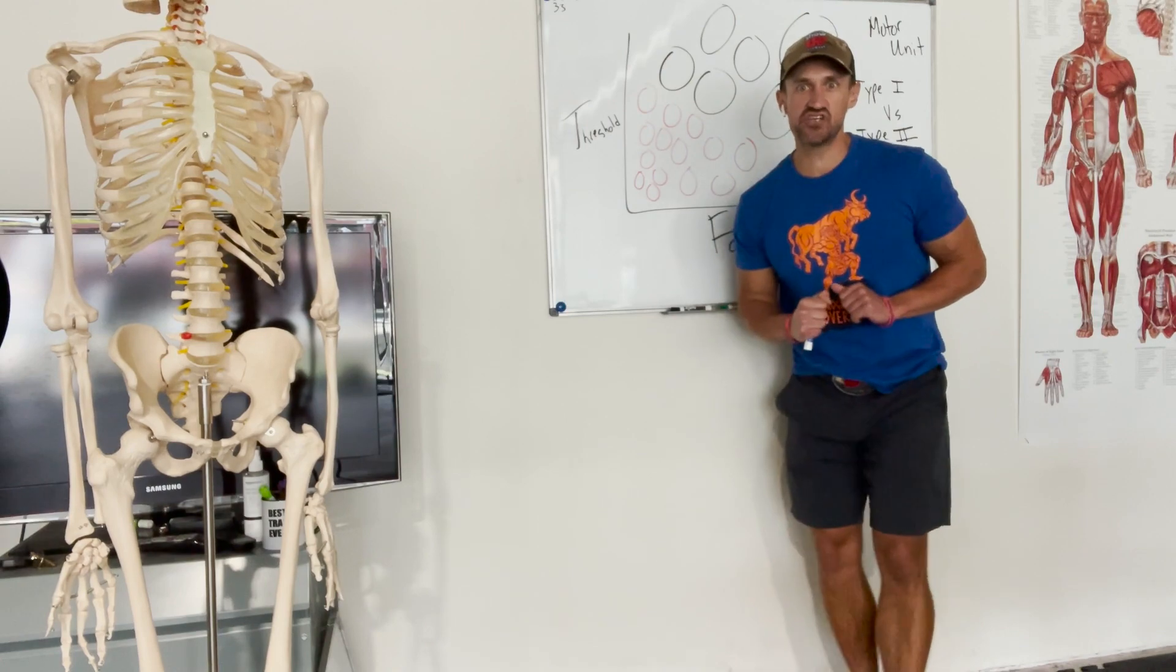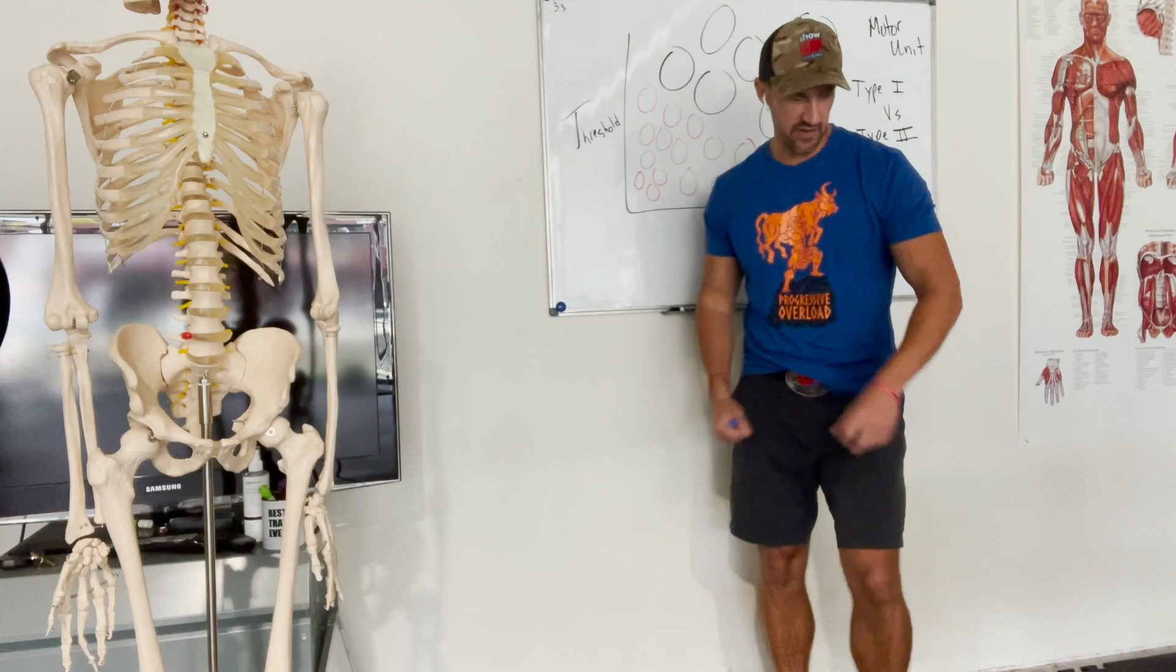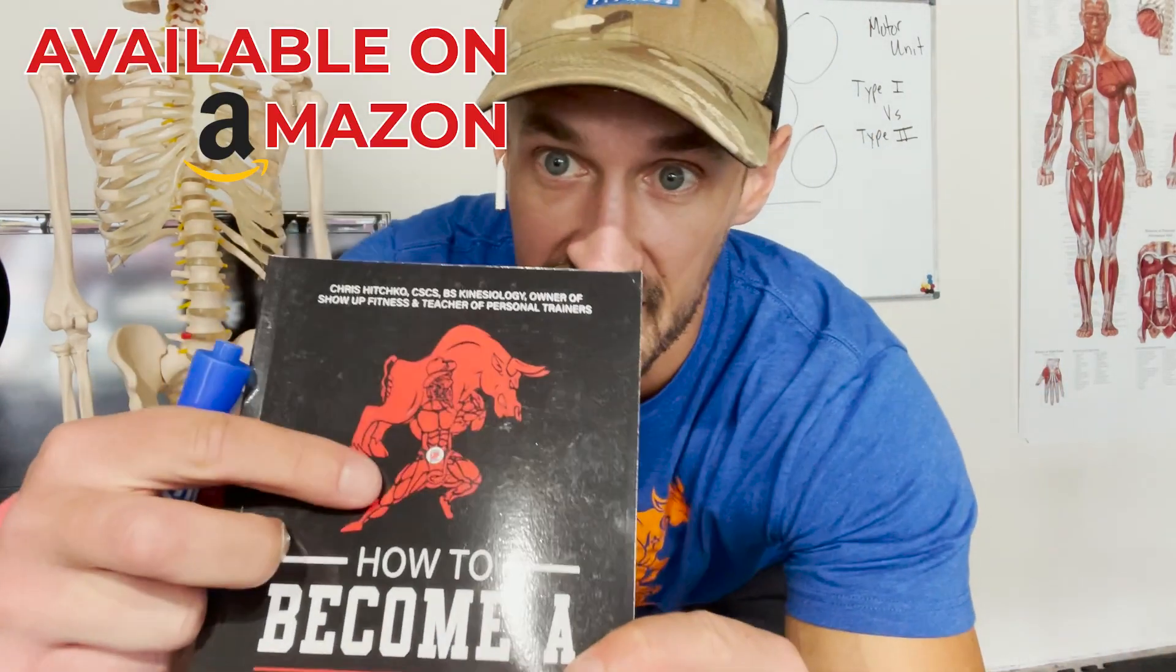Look at that sucker. Today we're going to teach you about the Henneman size principle. Now if you want to become a great personal trainer, check out my book, How to Become a Successful Personal Trainer. Look at that belt buckle. Milo. We should know who Milo is.